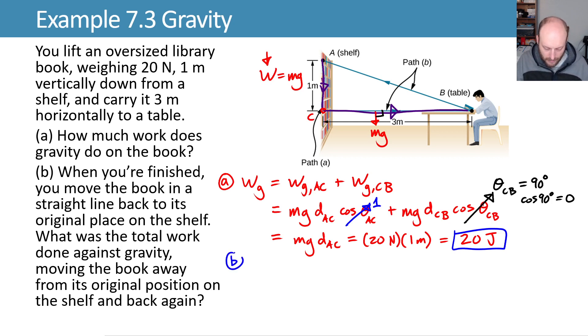For part B, the work done by gravity as we go straight from B to A is going to be the weight, Mg, times the distance as we get from B to A times the cosine of the angle between them. Here, we need to do a little bit of geometry.